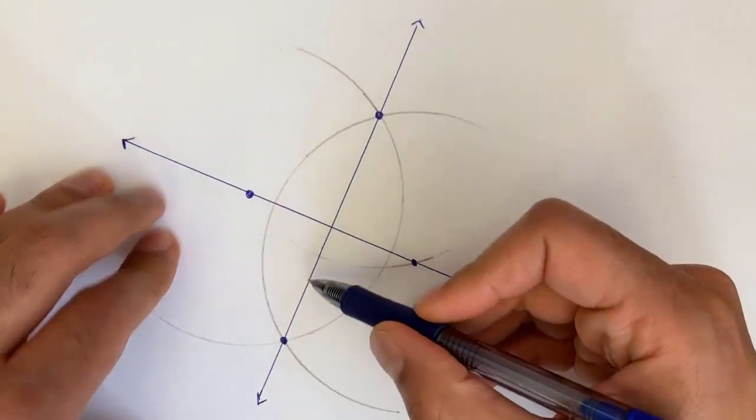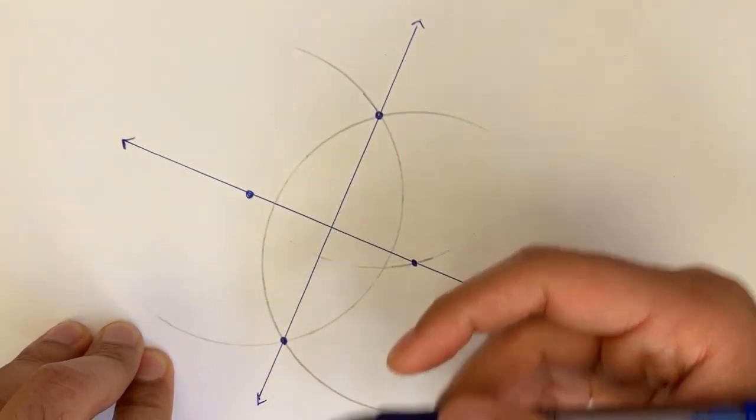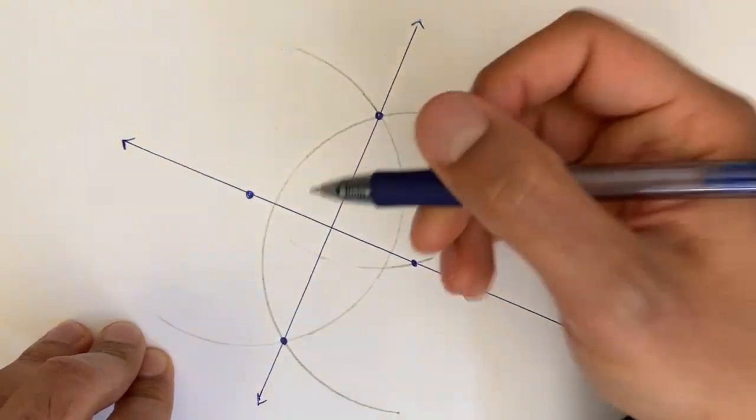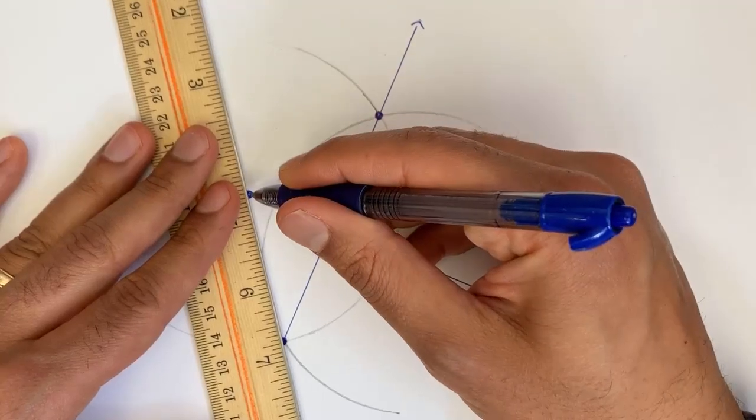So how do we feel good that this new line that I just drew is perpendicular to our original one? Well, let's connect the dots that we've made. So if we connect all the dots, we're going to get a rhombus.